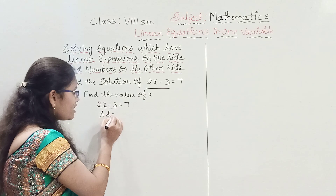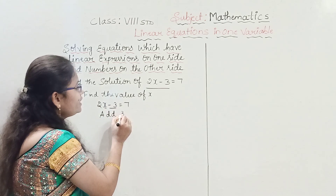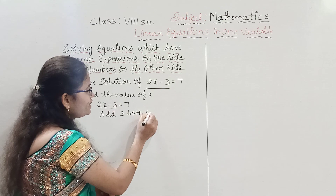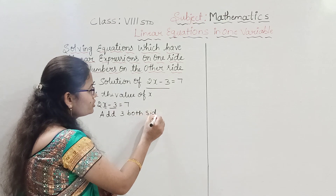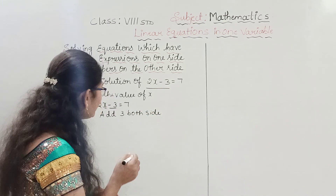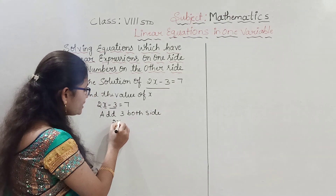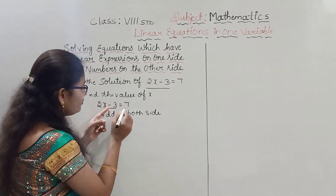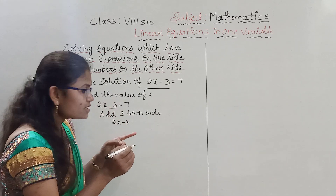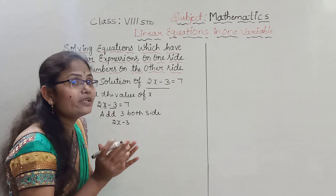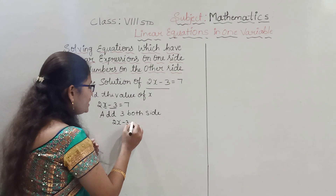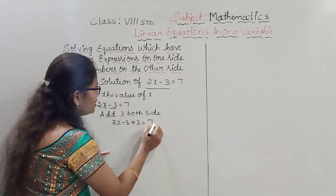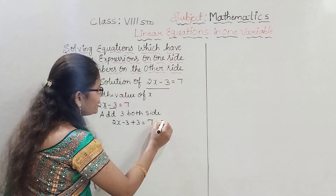So we add 3 to both sides. We take 2x minus 3 as it is and add 3, giving 2x minus 3 plus 3 equals 7 plus 3.